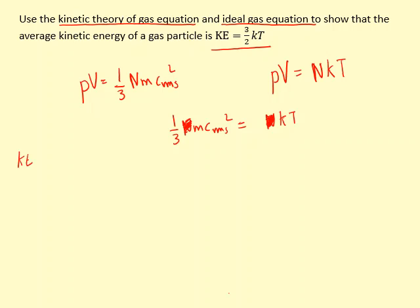Kinetic energy is equal to half m crms squared for one particle. But there's a 3 here, so I'm going to bring the 3 to the other side and then divide both sides by half.